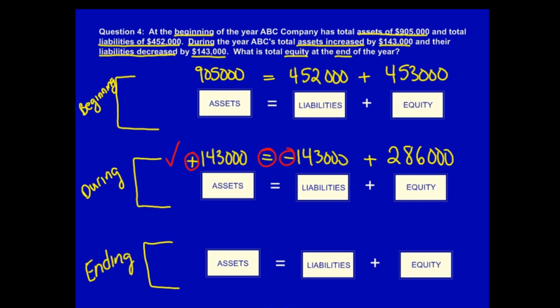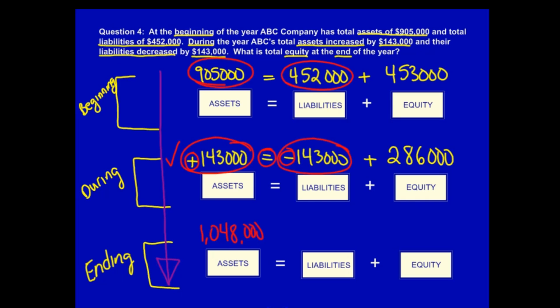Can we now calculate the ending balances? Absolutely. We now have an equation that moves down from the top of the page to the bottom. Beginning assets plus increase in assets is equal to ending assets: $1,048,000. Beginning liabilities less the decrease in liabilities is equal to ending liabilities: $309,000. We now have two ways to calculate equity. Using beginning and during balances: beginning equity plus the increase in equity is equal to ending equity, which is $739,000. The answer is $739,000.